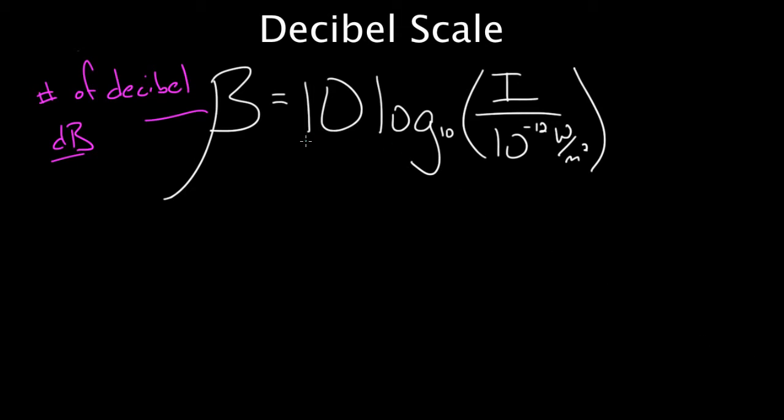10, this 10 just denotes the fact that this is the decibel scale and not just the bell scale. If you didn't multiply by 10, you'd have the bell scale. But this is multiplied by 10. We like the 10. We're going to call it decibel. Log, we'll talk about log in a minute, logarithm here.